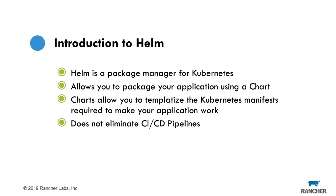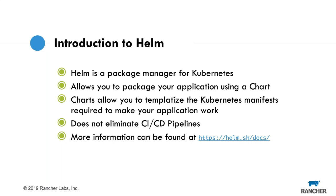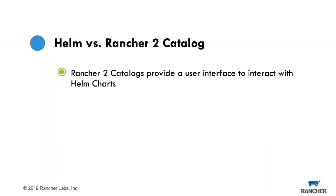More information can be found at helm.sh/docs. There's a million ways to build a Helm chart — no one right way; people have their own styles. Rancher 2 catalogs provide a user interface to interact with Helm charts. I'll be demoing this when I deploy WordPress — it builds a graphical UI and Rancher-managed lifecycle around your Helm charts, making point-and-click deploys possible.